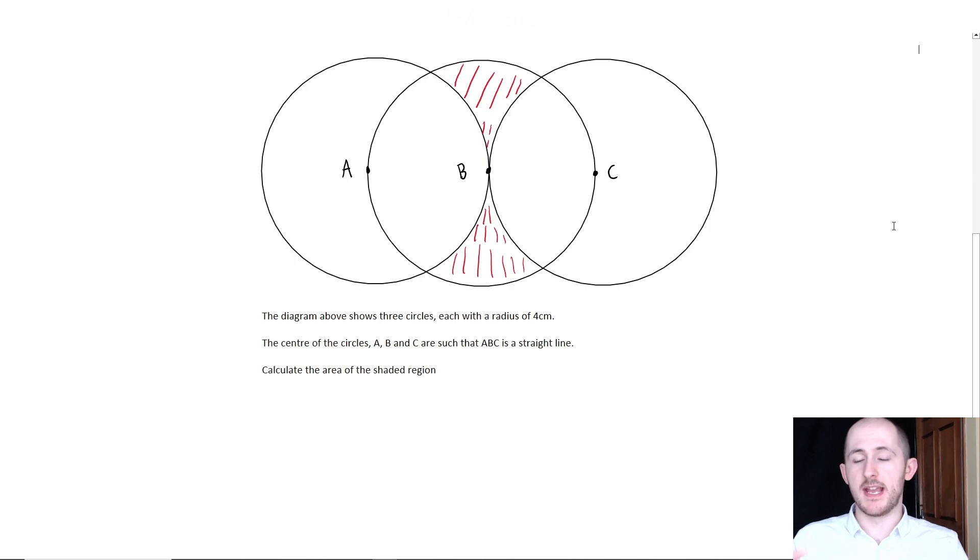Here's the question: we have three circles, each has a radius of four centimeters, and they're overlapping each other. Their centers A, B, and C are on a straight line and we have to calculate the area of the shaded region.